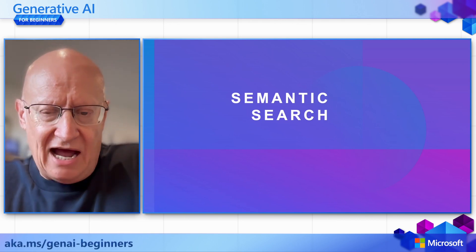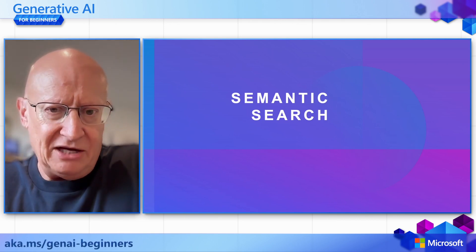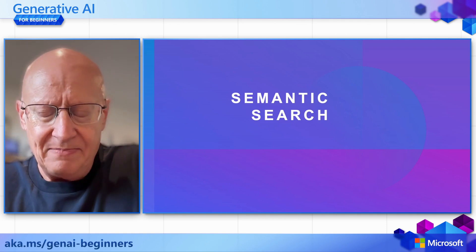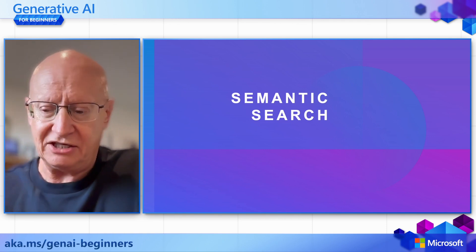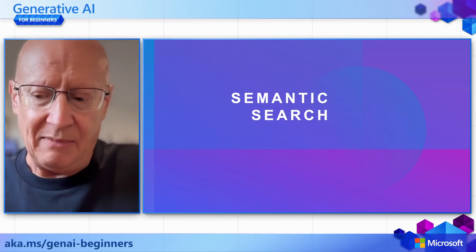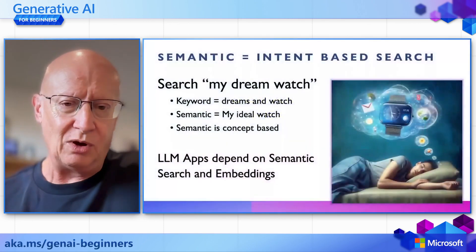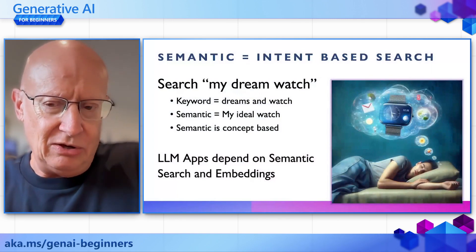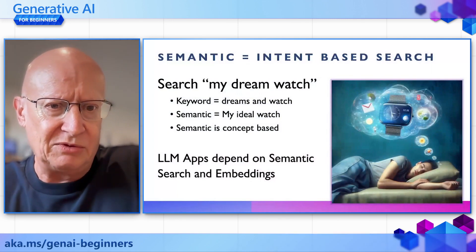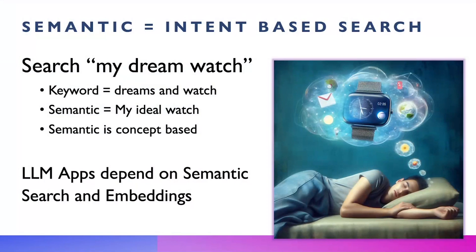When I first started learning about generative AI, one of the terms that was used a lot was semantic search. I must admit, at the time, I didn't really know what semantic search was. But after some digging around, I got the general idea. Semantic search is really intent-based search — boiling down to what the core concepts are that you're looking for.